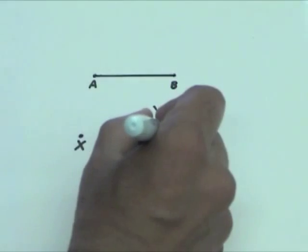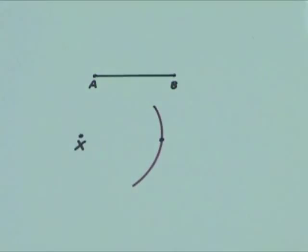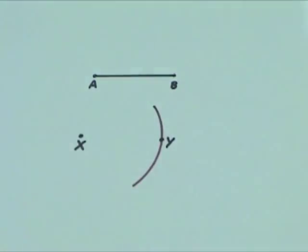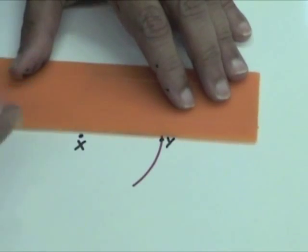Mark any point on the arc. Label the point Y. Draw a line segment XY.